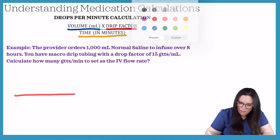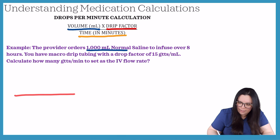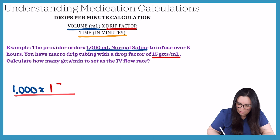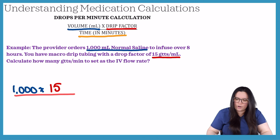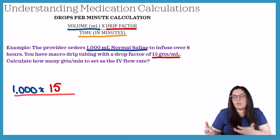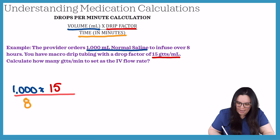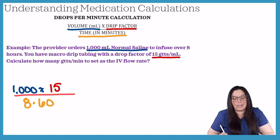Our volume is 1000 mL of normal saline, so we plug in 1000, times our drip factor which is 15. Now we just need to plug in our time in minutes. The problem gave us hours, so we need to convert — that's eight hours times 60 minutes per hour.